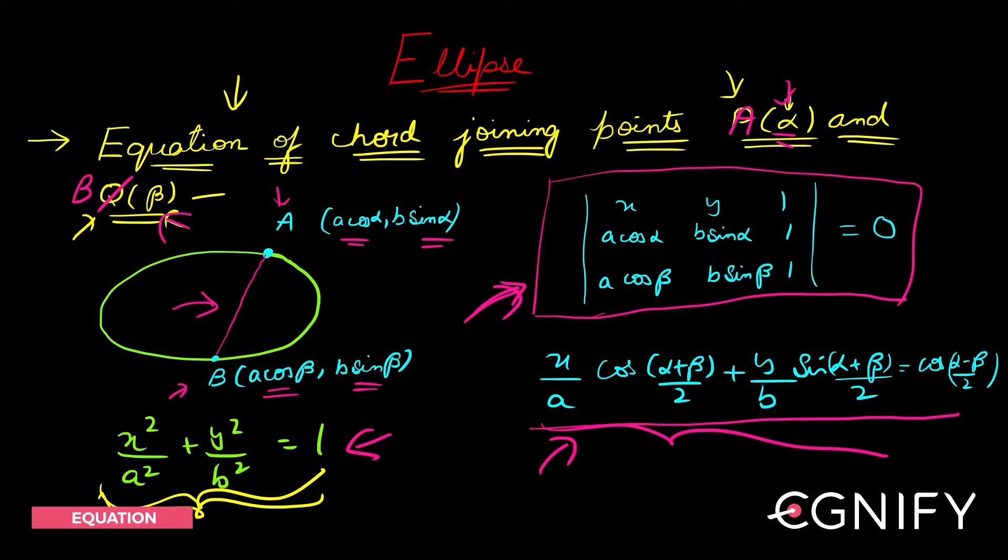Now writing this is not very difficult because ultimately it is just the equation of the straight line joining these two points. You know two points on the line, so you can use the two-point form. If there is a point (x₁, y₁) and (x₂, y₂), the equation of the line joining these two is: (y - y₁) = [(y₂ - y₁)/(x₂ - x₁)](x - x₁).